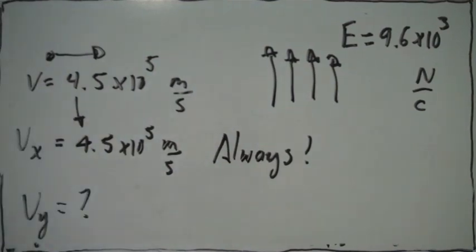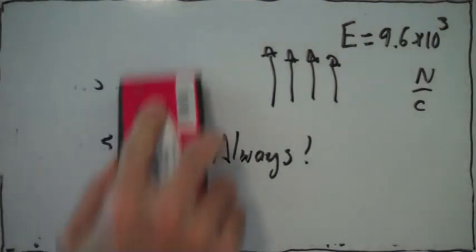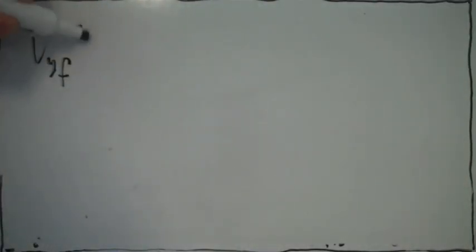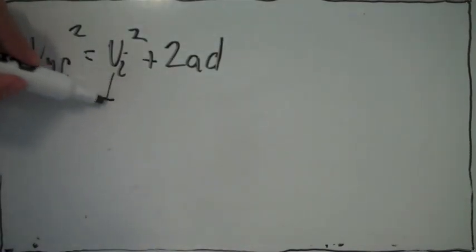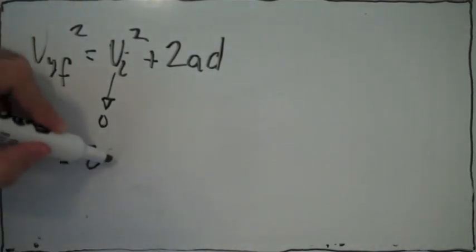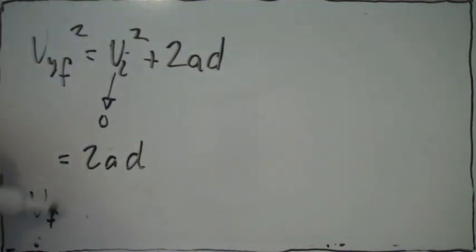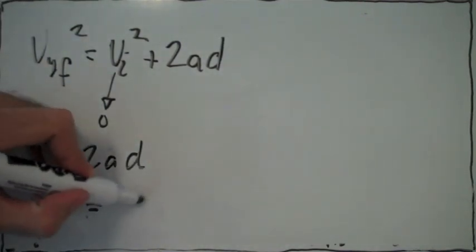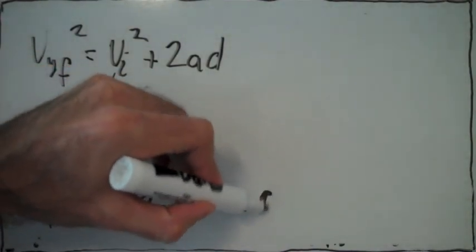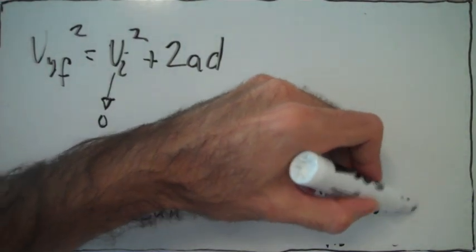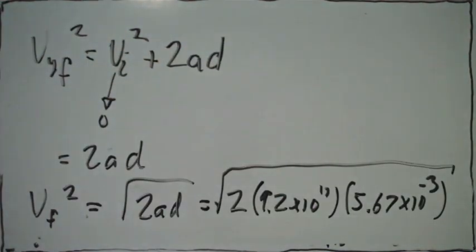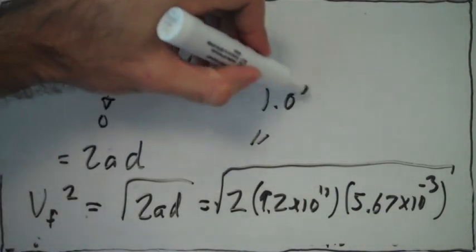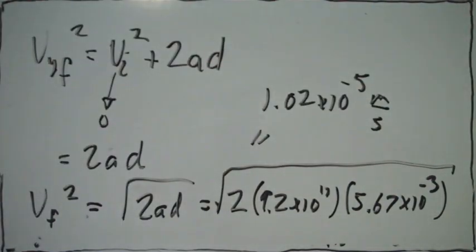What about the y direction — what is the y velocity? To calculate the y velocity at this time, we can say the final velocity squared equals the initial velocity squared plus 2ad. The initial velocity in y is zero, so the final velocity in y is just given by 2ad, and we take the square root. Plugging in the acceleration in y and the displacement in y, which we already found, we calculate this value — that's the final velocity in the y direction.